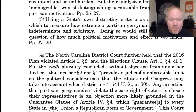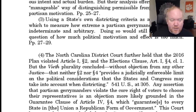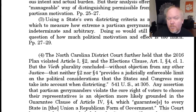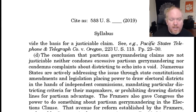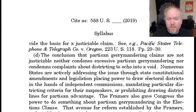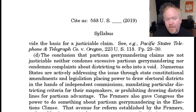The Vieth plurality concluded, without objection from any other justice, that neither Section 2 nor Section 4 provided a judicially enforceable limit on the political considerations that states and Congress may take into account when districting. Any assertion that partisan gerrymandering violates voters' right to choose their own representatives is an objection more likely grounded in the Guarantee Clause of Article IV, Section 4, which guarantees to every state a republican form of government. This court has several times concluded the Guarantee Clause does not provide the basis for a judicial claim, as it remains unclear exactly what a republican form of government requires.